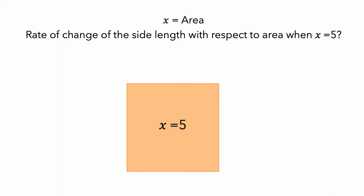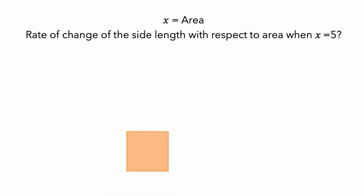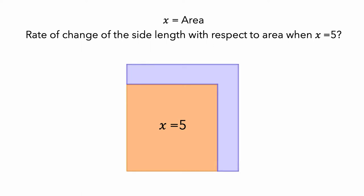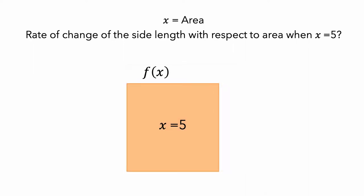Initially, it seems like we don't need to use a variable because we already know the area of the square. But if we're interested in thinking about the rate of change, then we need to imagine that the square is growing so that the side length and area are both getting larger. And right when the area is 5, we want to know the rate of change of side length. So for our original square, we will let f represent the square's side length. Then f is equal to the square root of x, since the square root of x times the square root of x is x, the square's area.